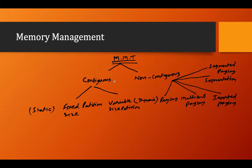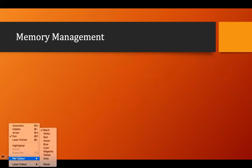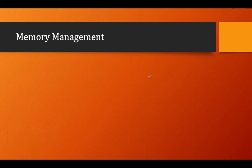Now let's go to contiguous memory allocation. What happens in contiguous memory allocation — you can think of it like an array. An array is an example of contiguous memory allocation.